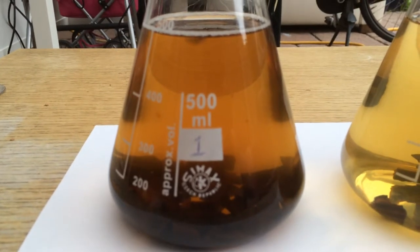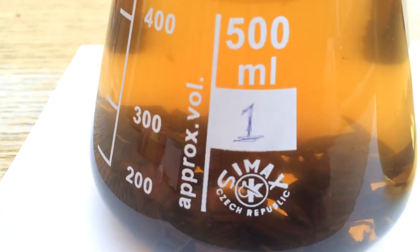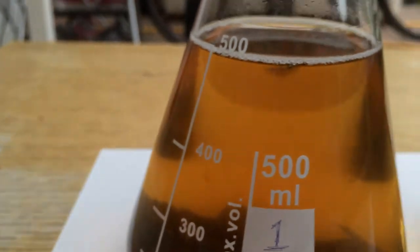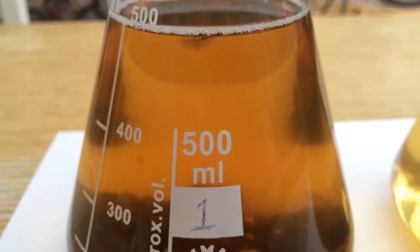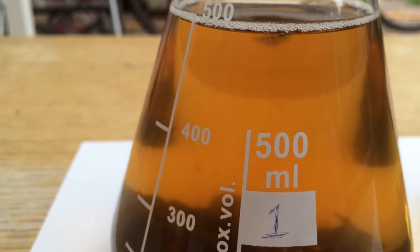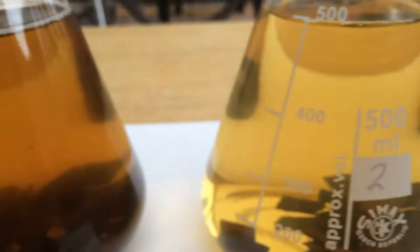The first Erlenmeyer is filled with loads of oak chips, a bit too much actually, in tap water and it's turning murky, not very translucent. It's basically turning gross.